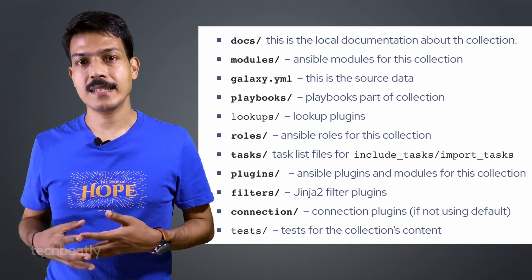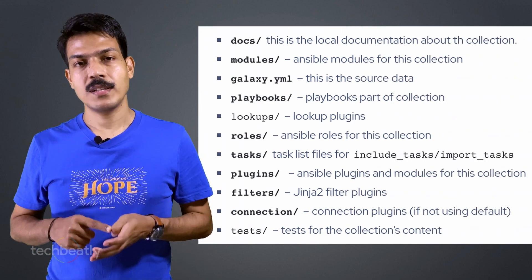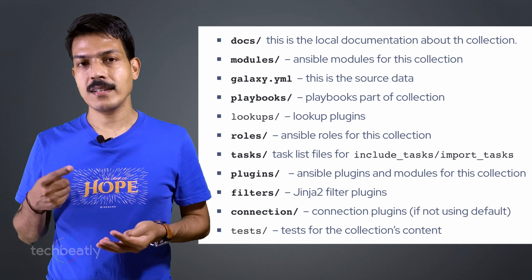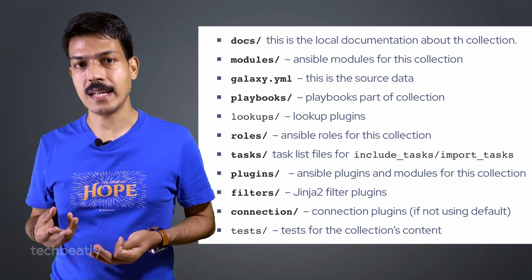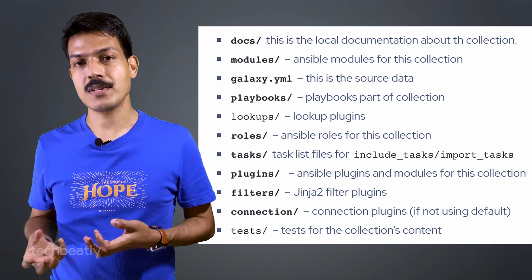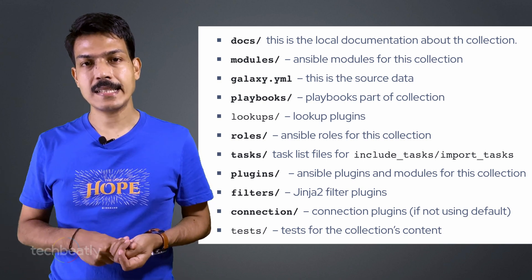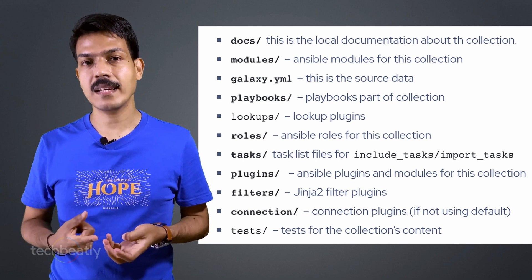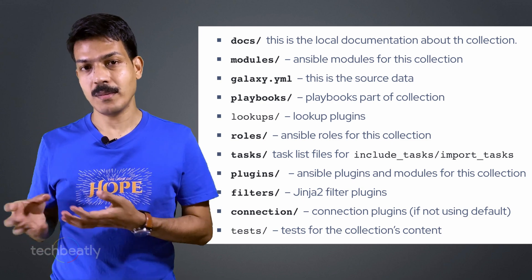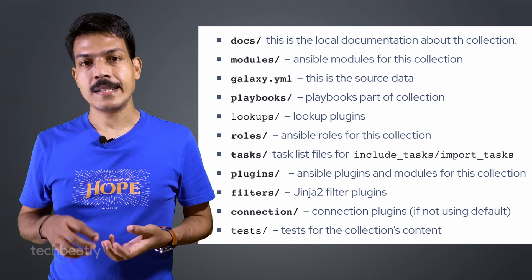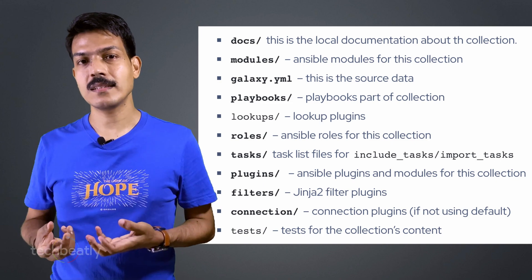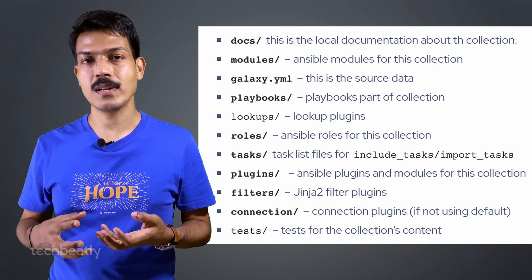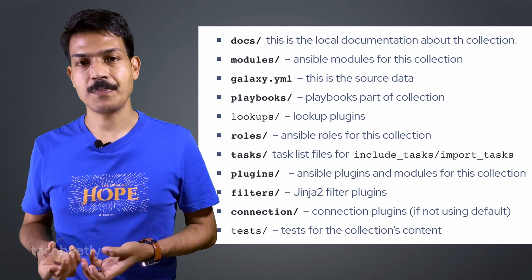Let me explain some important directories inside Ansible collections. The docs directory contains local documentation about the collection, and there will be a galaxy.yml which is the source data. The playbooks directory will contain playbooks which are part of the collection. There will be a tasks directory where task files will be included, along with include_tasks and import_tasks. Then there are plugins and modules where modules will reside, a lookup directory, filters for Jinja2 filter plugins, connection for connection plugins, and roles for Ansible roles within this collection.